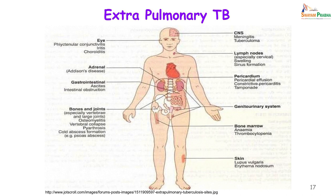Extrapulmonary tuberculosis is usually restricted to one part of the body and as you can see in this picture, it does not spare any organ. It can involve the central nervous system — where you have meningitis or a tuberculoma — all the lymph nodes, the pericardium, the genitourinary system, bone marrow, skin, bone and joints, gastrointestinal tract, adrenals and even the eyes. But when the disease spreads all over the body, then we refer to it as miliary tuberculosis.